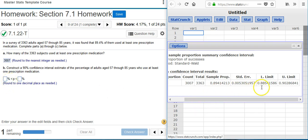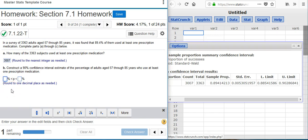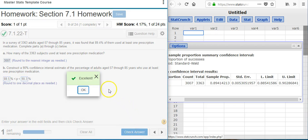That means I have to convert these numbers from decimal to percent, so I have to move the decimal point two places over when I put my answer in. So this first one is going to be 88.5 and the second one is going to be 90.3. I check my answer. Excellent.